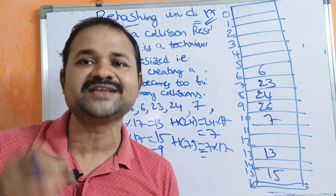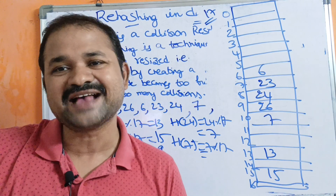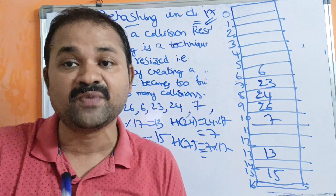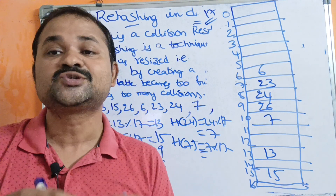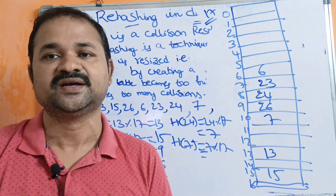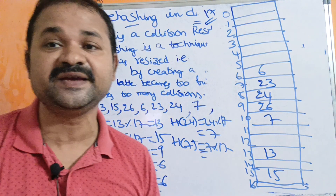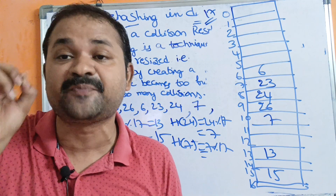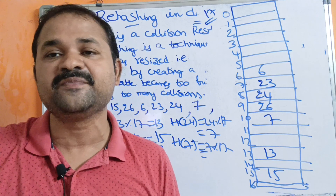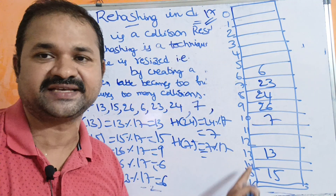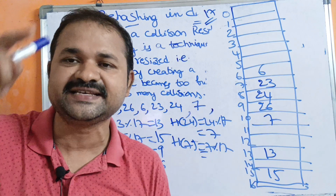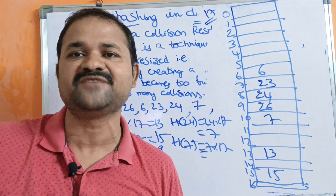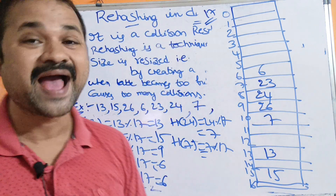The advantage of rehashing is that when you double the hash table size, the number of collisions is reduced and minimized, improving the performance of hashing. In summary, rehashing means doubling the hash table size, but selecting a prime number greater than that doubled size. Previously the table size was 7, doubling gives 14, and 17 is the prime number greater than 14.